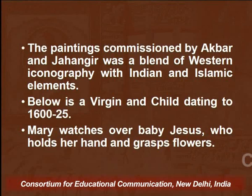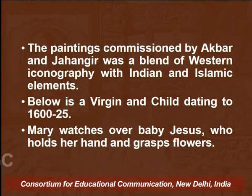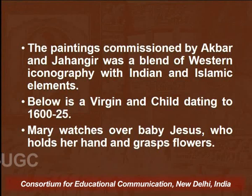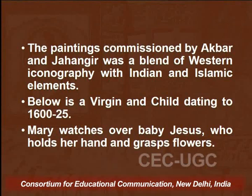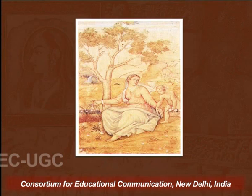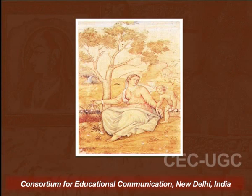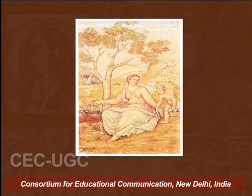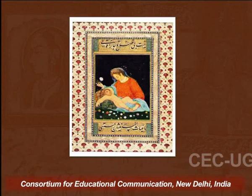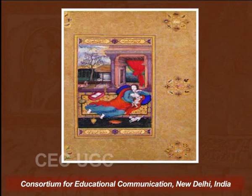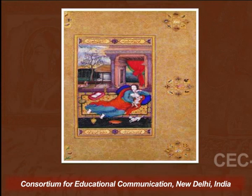The paintings commissioned by Akbar and Jahangir were a blend of western iconography with Indian and Islamic elements. A very important example of one such integrative style is that of a Virgin and Child dating 1600 to 1625. In this painting, Mary watches over baby Jesus, who holds her hand and grasps flowers. Not to miss the use of subtle colours and softness, which is clearly indicative of European style. These were specific paintings with Christianity as the backdrop.